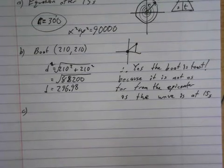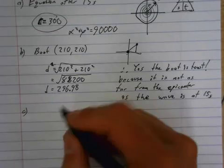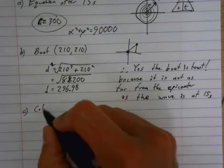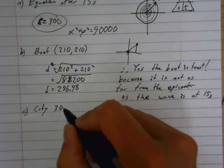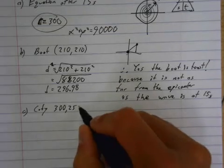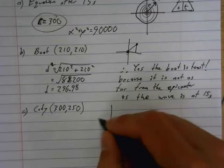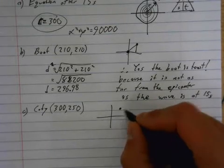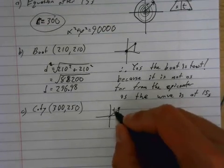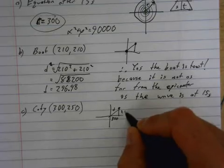How long will it take the tidal wave to hit a city located at, so city is going to be 300, 250. How long is this going to take? Once again, I am going to calculate the distance to that city. So 300 and 250 is like there. I am going to calculate this distance. That is 300. This is 250.